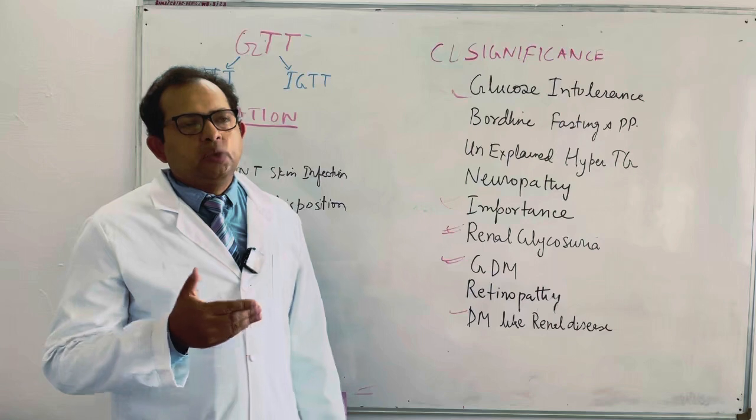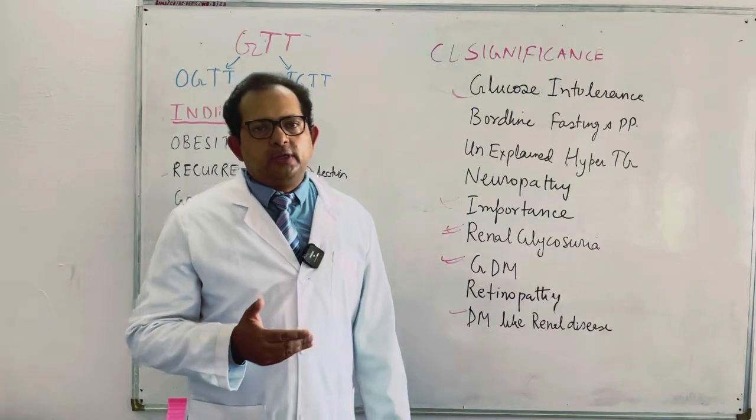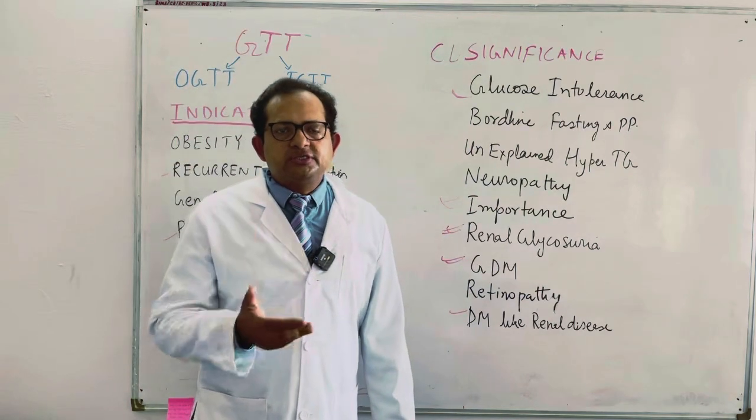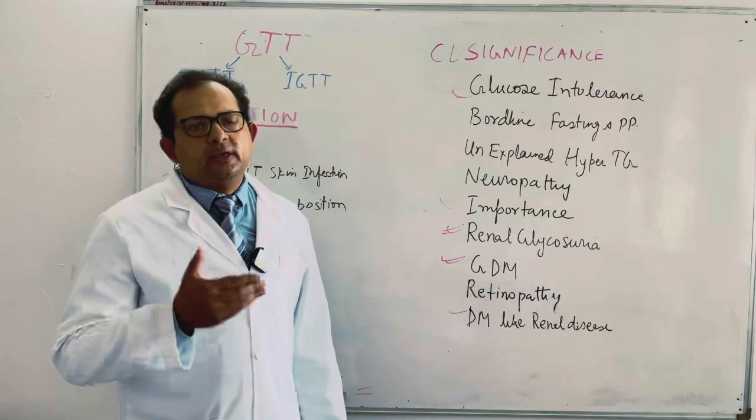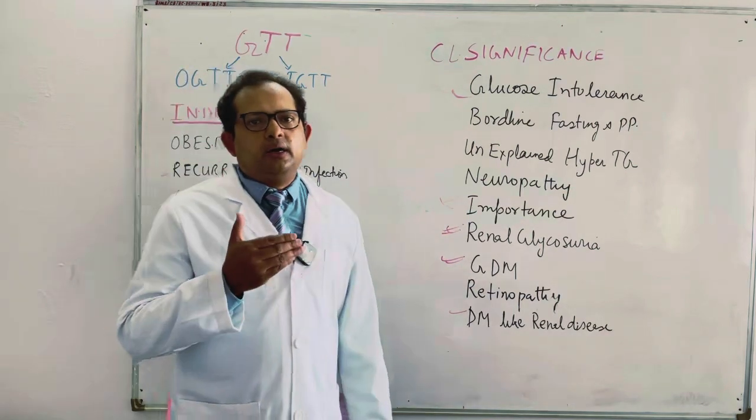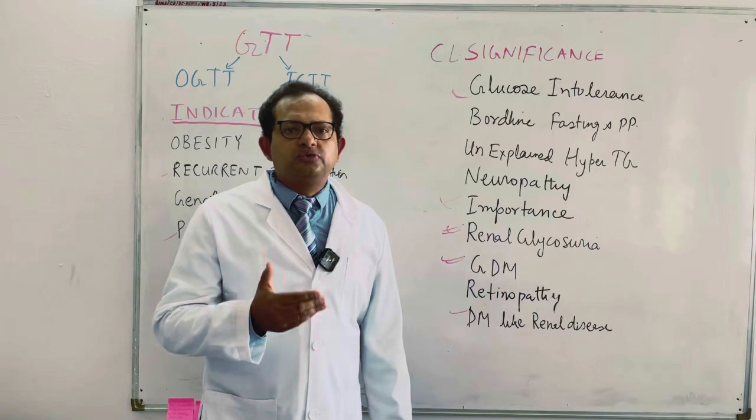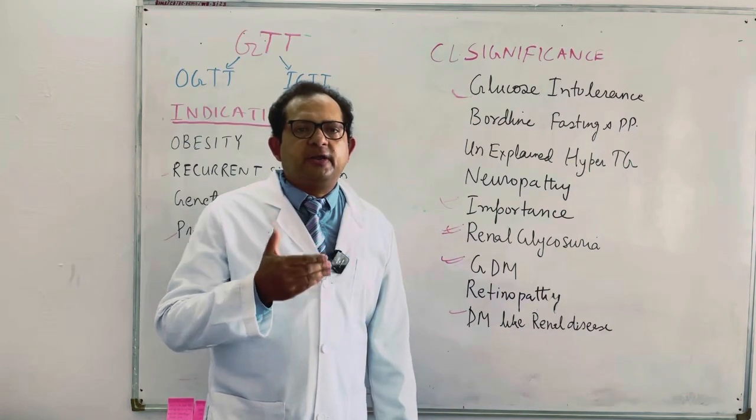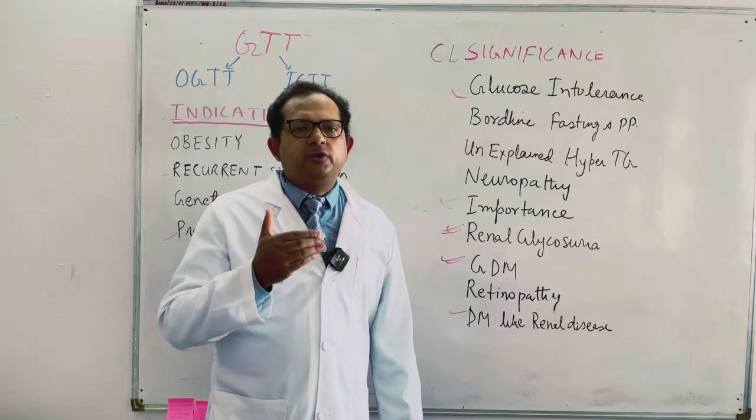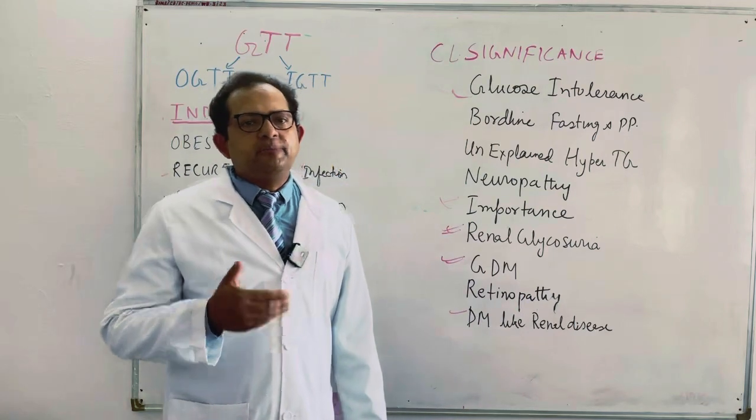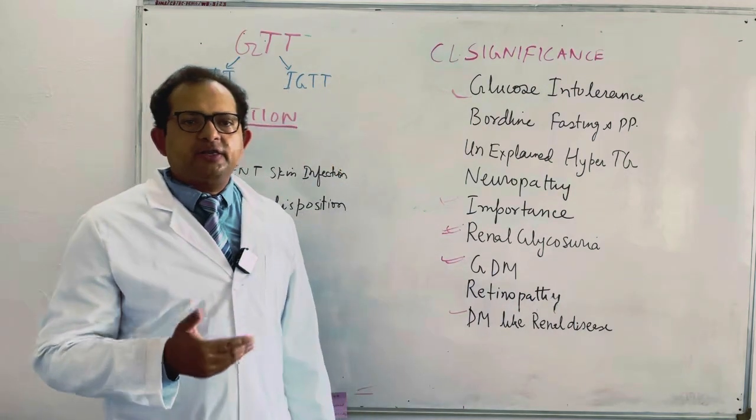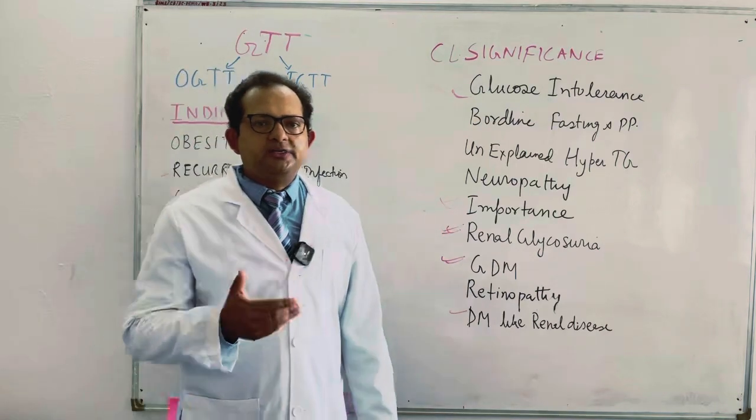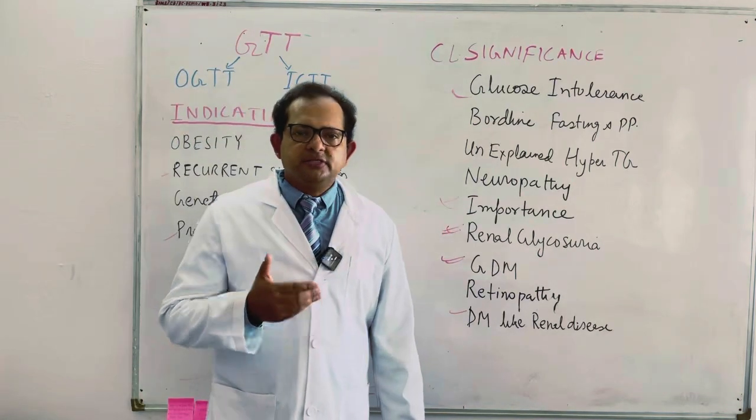Whereas in gestational diabetes we have to take three samples or four samples according to the American Diabetic Association or the ACOG. It depends which criteria you are following. In gestational diabetes we will take fasting sample and after giving 75 grams of glucose, we will take samples after one hour and after two hours or three hours depending which criteria we are following.